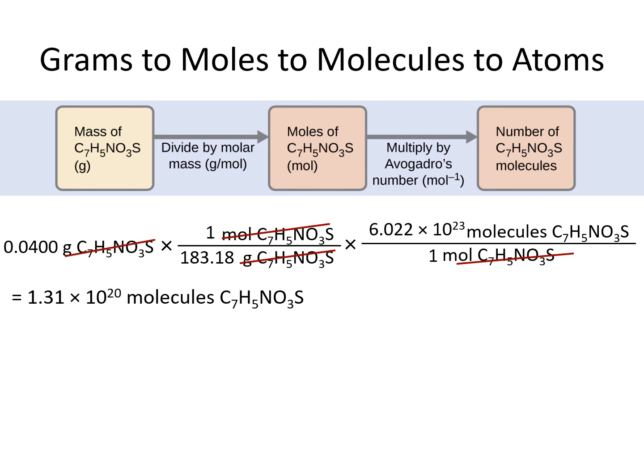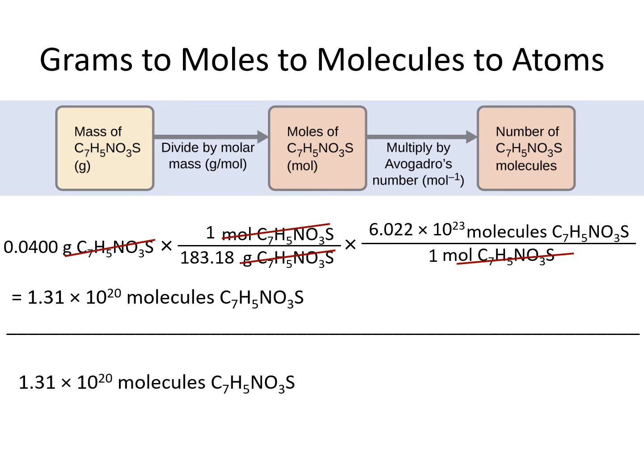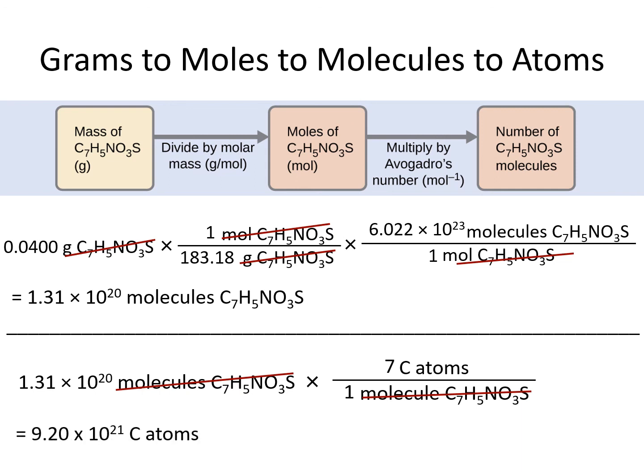To go from molecules of saccharin in the sample to atoms of carbon in the sample, we use the relationship that each molecule contains 7 carbon atoms. We set up a conversion factor with molecules of saccharin on the bottom and atoms of carbon on the top, filling in 7 next to carbon atoms and 1 next to molecules of saccharin. Multiplying by 7, we come out with 9.20 times 10 to the 21 carbon atoms.